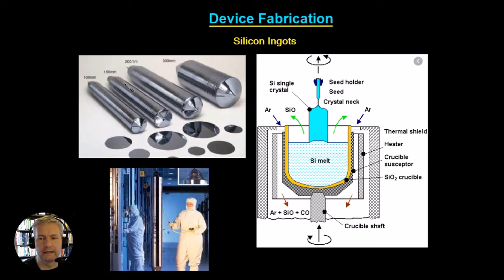Once we've produced the ingot we slice it into little disks and these are the silicon wafers that you have possibly seen before. Each of them is approximately 1/8th of an inch thick and they look almost like a music CD.